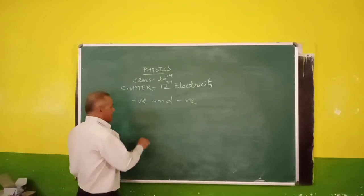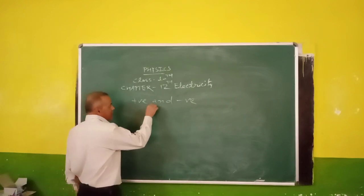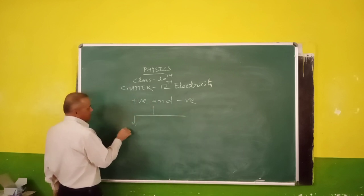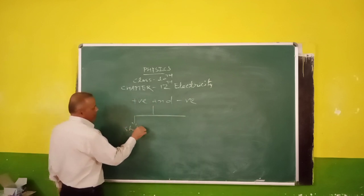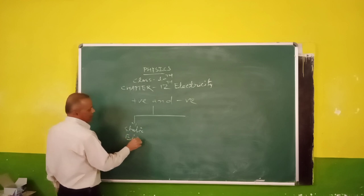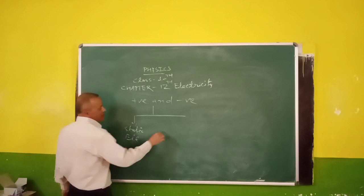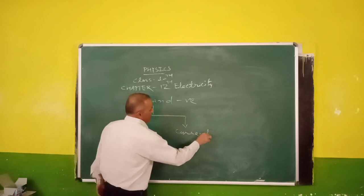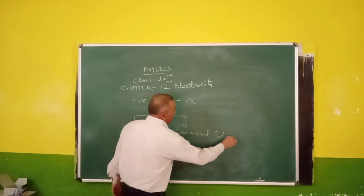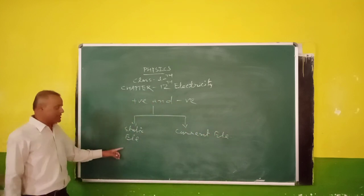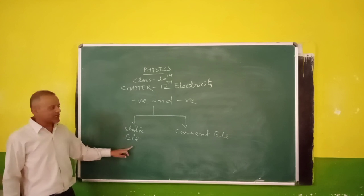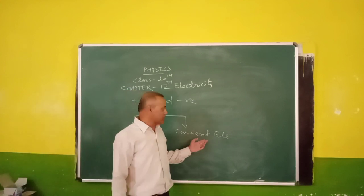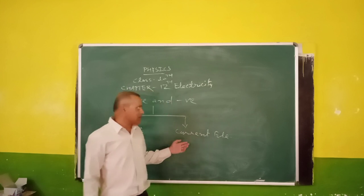Now, electricity is also divided into two parts. First one: static electricity. And second one: current electricity. In static electricity, we will discuss the charge at rest. But in current electricity, we will discuss the motion of the charge through the conductor.